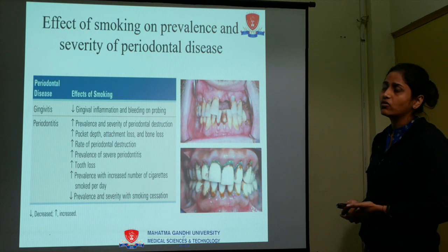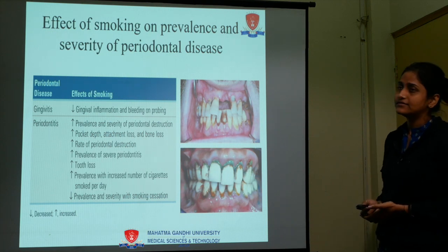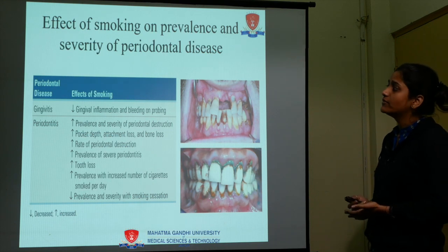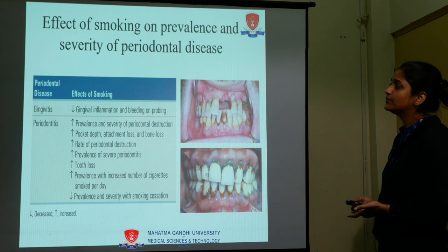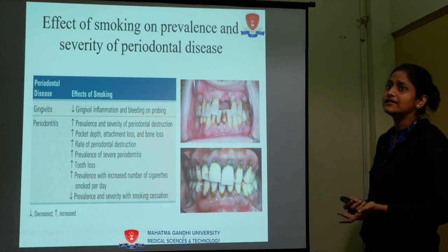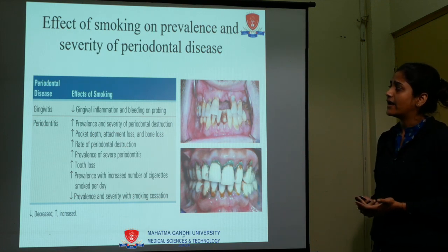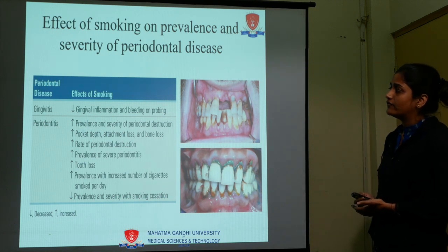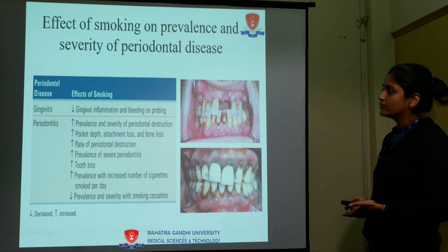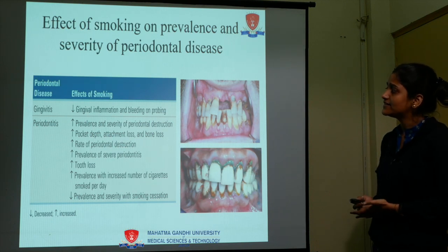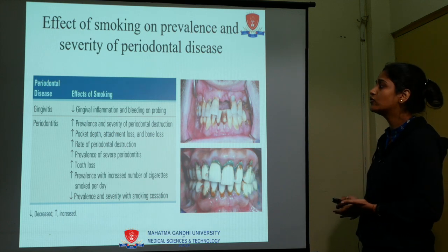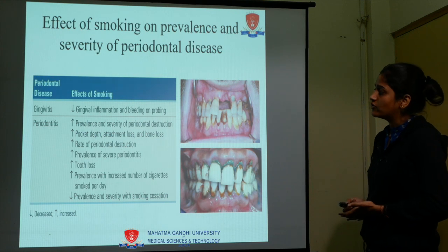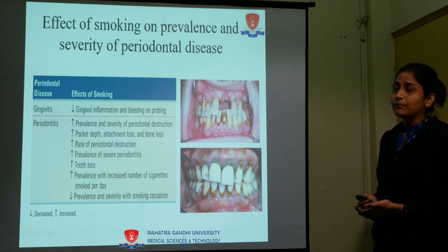Evidence from various studies including longitudinal studies, randomized controlled trials, cross-sectional studies, and systematic reviews have all concluded that in gingivitis, when comparing smokers and non-smokers, smokers show less bleeding on probing compared to non-smokers. This is due to the vasoconstrictive effect of nicotine.